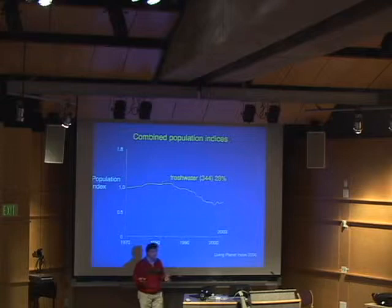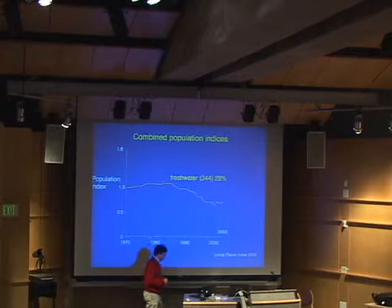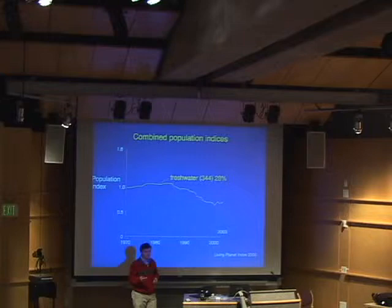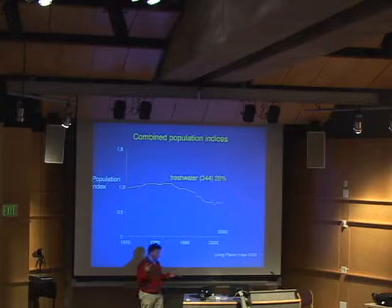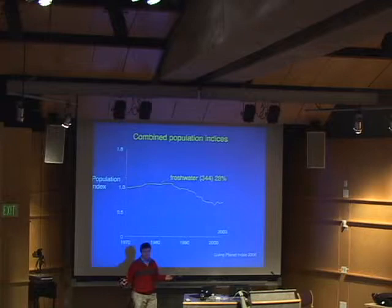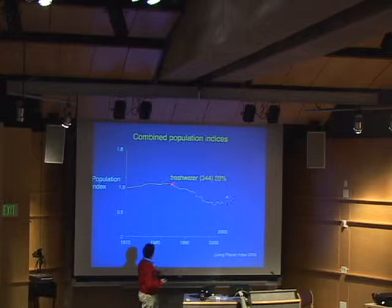Another way to look at this is to look at combined population indices. This is the Living Planet Index of the Worldwide Fund for Nature. This is using some fairly good and sophisticated statistical methods of combining population trends from different species. It's just one snapshot — horribly biased, because we don't count things like millipedes. It's biased toward the big things, and we know big things often are not doing so well.